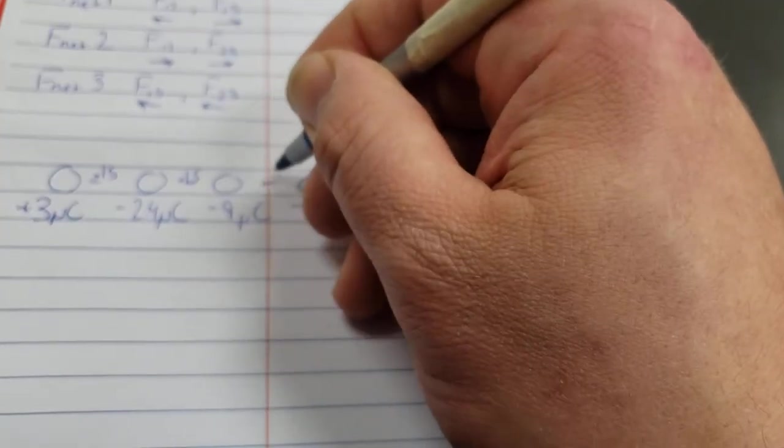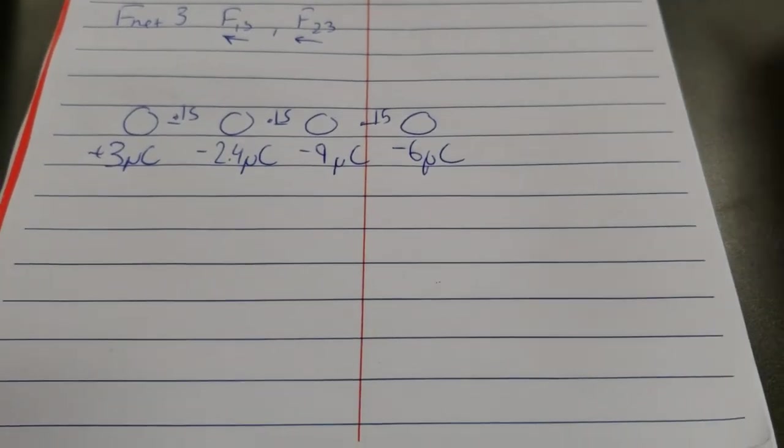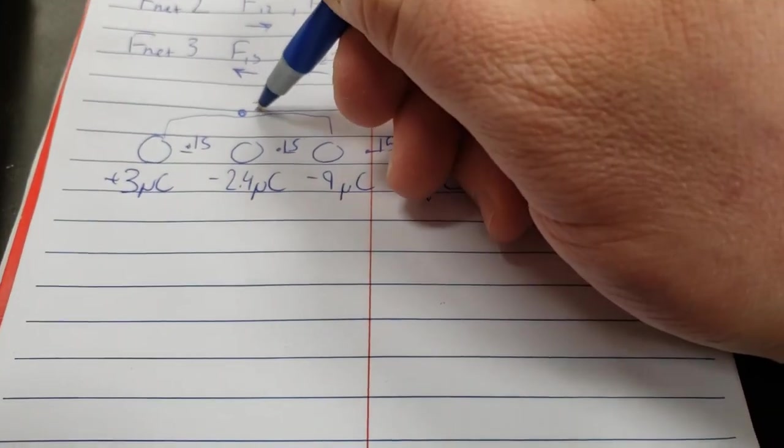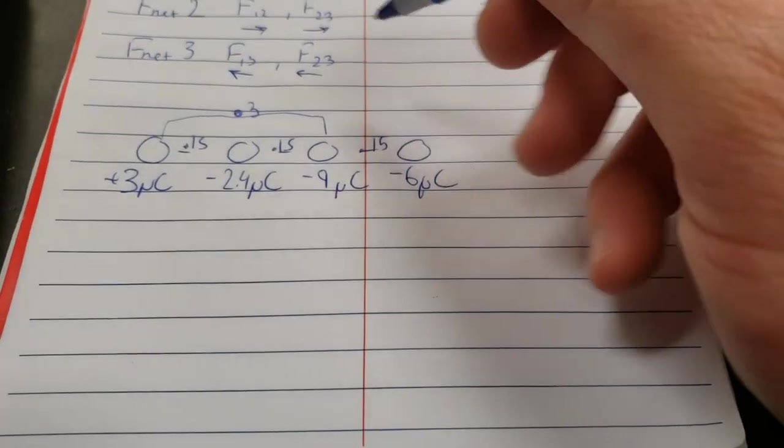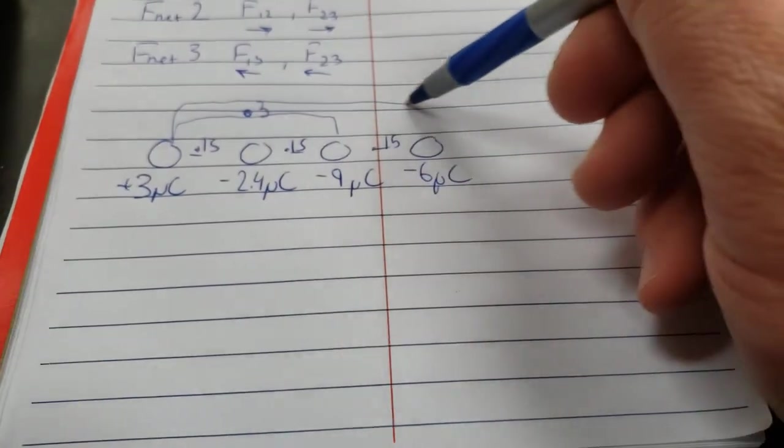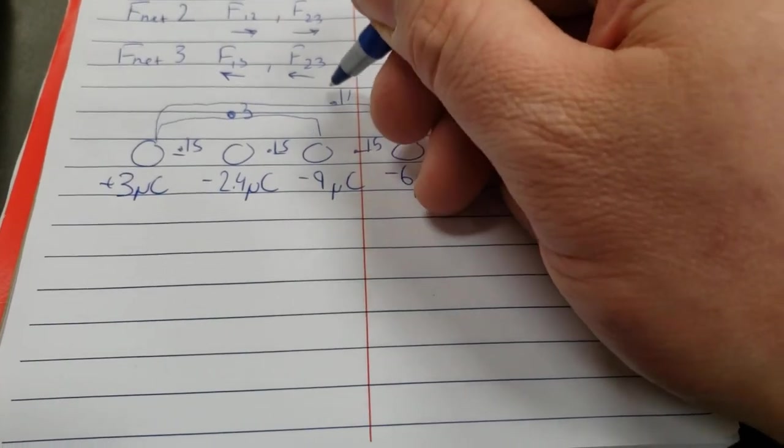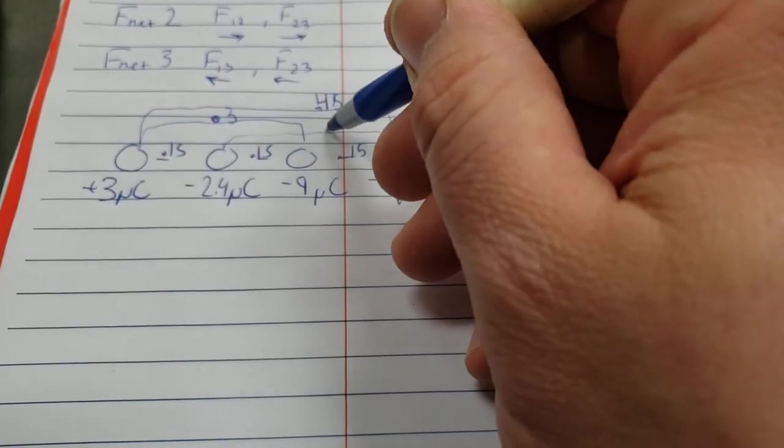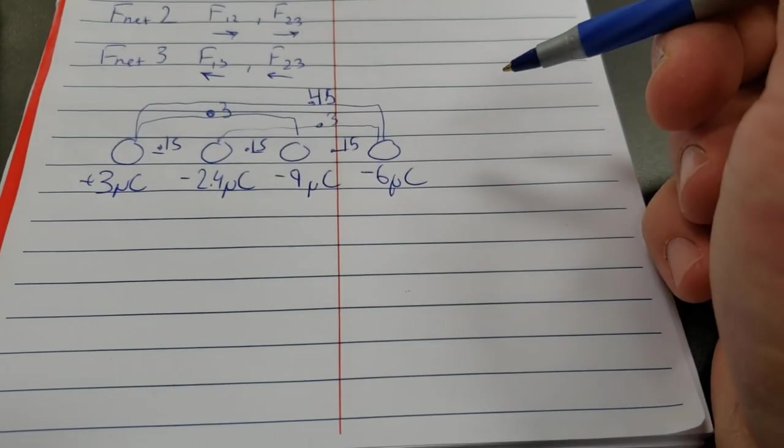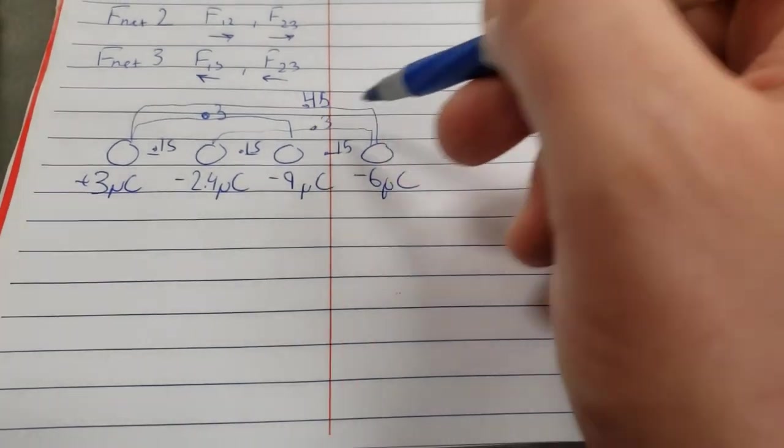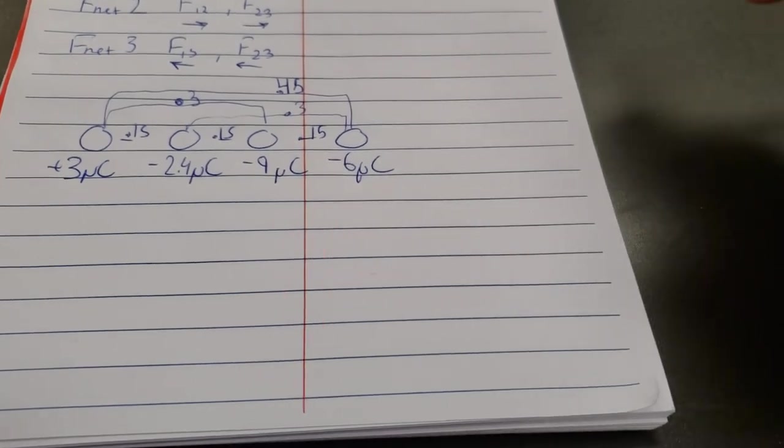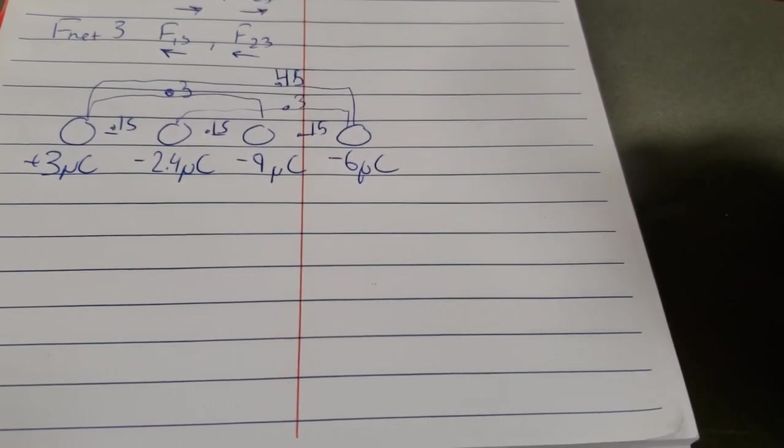Each gap is 15 centimeters. So 0.15, 0.15, 0.15. Now, that means that this distance is 0.3. And that means that this distance is 0.45. Also, this one would be 0.3. And I think that outlines all the different distances. But I'm pretty sure you can look at that and make the math there.